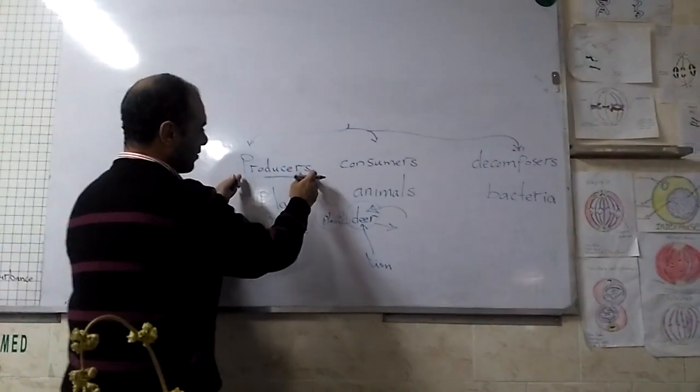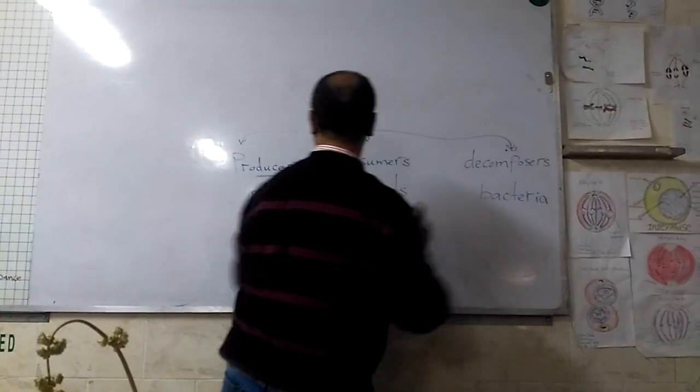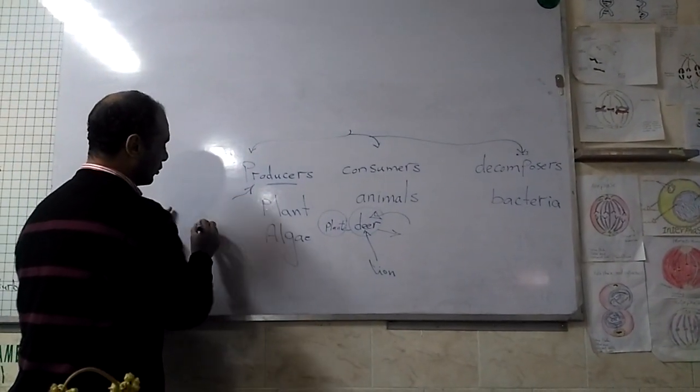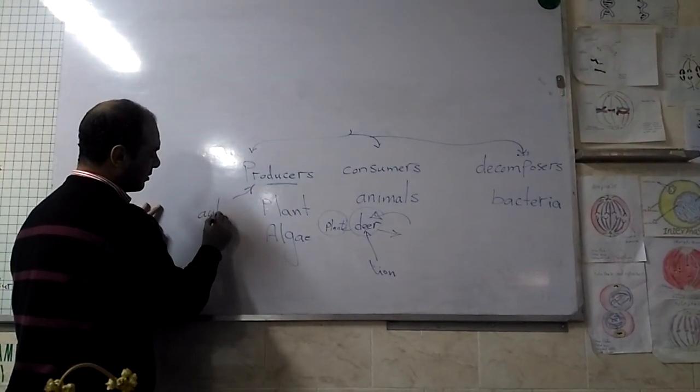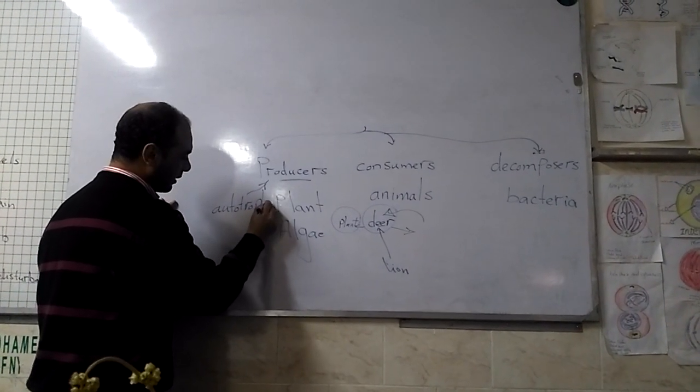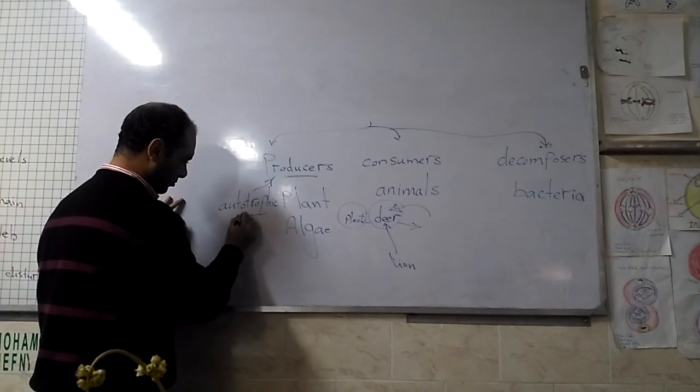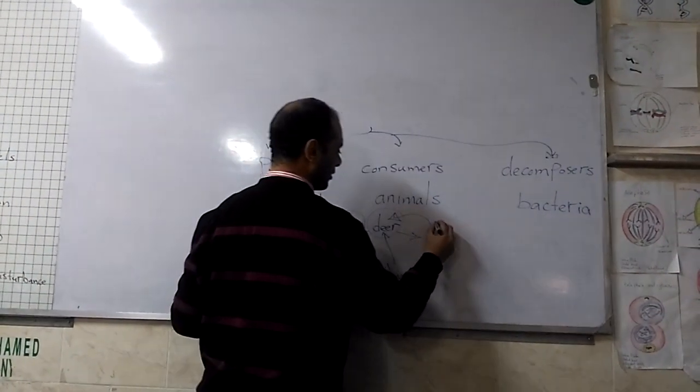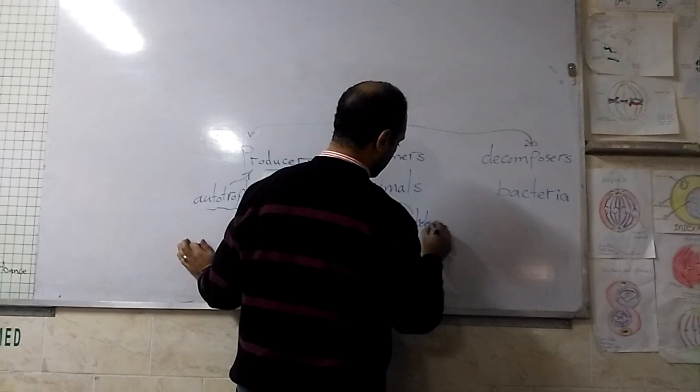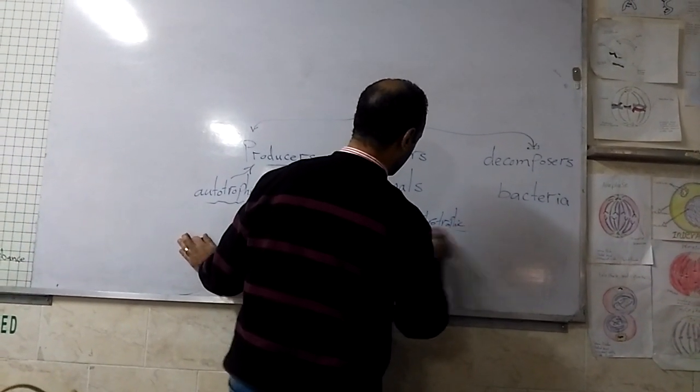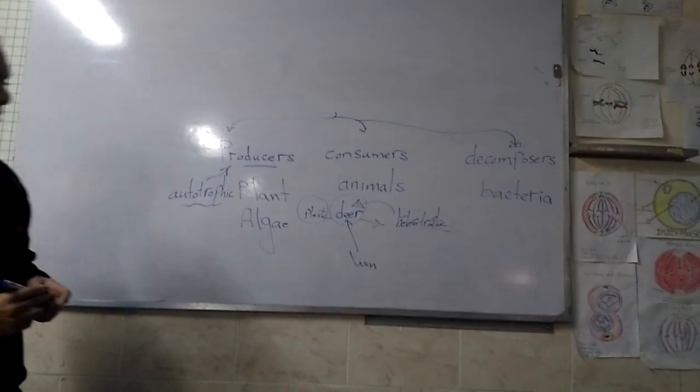So there are three levels of energy. For producers, we can say autotrophic living organisms.